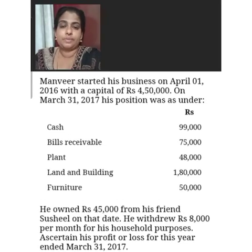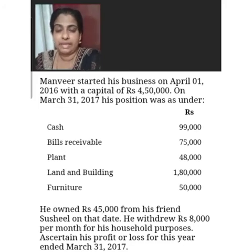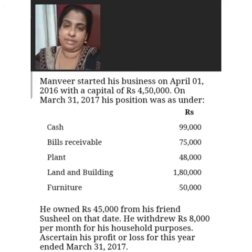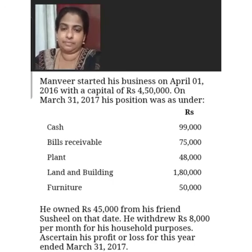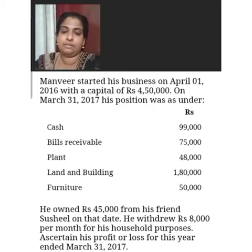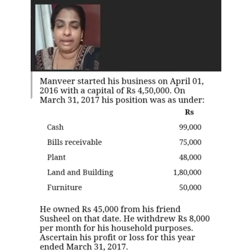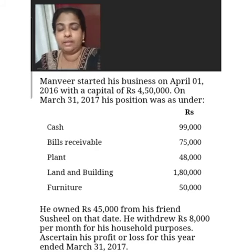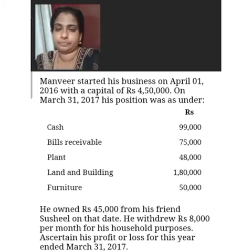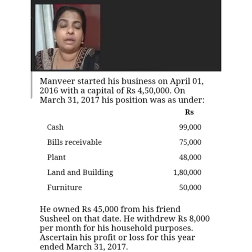In this problem, the opening capital of ₹4,50,000 is given, and closing balances of various assets and liabilities are also given. So first we prepare the statement of affairs as on 31st March 2017. We enter cash ₹99,000, bills receivable ₹75,000, plant ₹48,000, land and building ₹1,80,000, and furniture ₹50,000. There are no liabilities given, so no entries on the liability side. The total will be the closing capital.